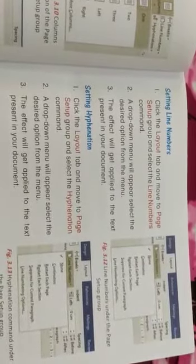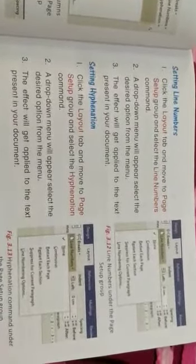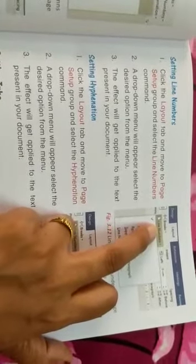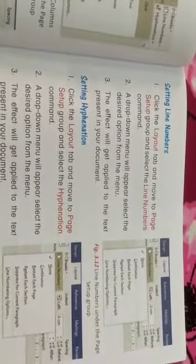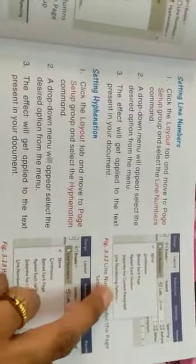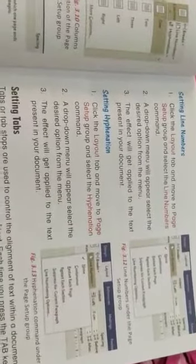Come to page number 31. The next topic: click the Layout tab and move to the Page Setup group and select the Line Numbers command. Again, click on the Layout tab, move to Page Setup, then select the Line Numbers command. This was Break — we have done that — and now it is Line Numbers. When Line Numbers is selected, a drop-down menu appears, and these many options will come as shown in figure 3.12. Select the desired option from the menu; the effect will be applied to your present MS Word document automatically.